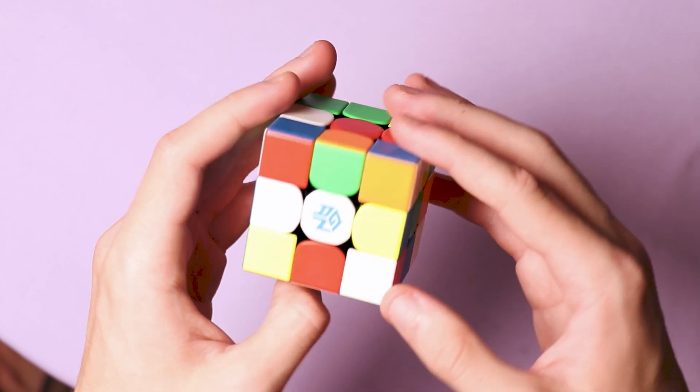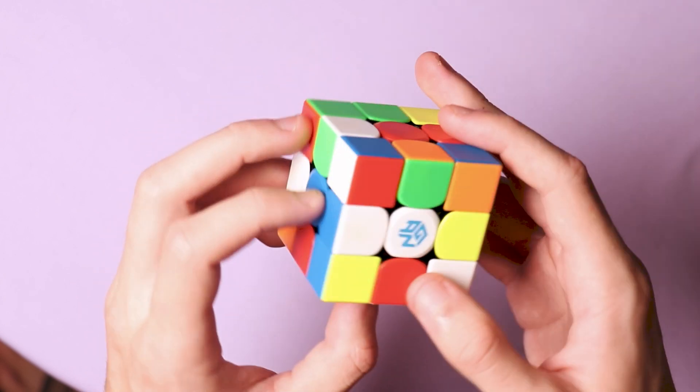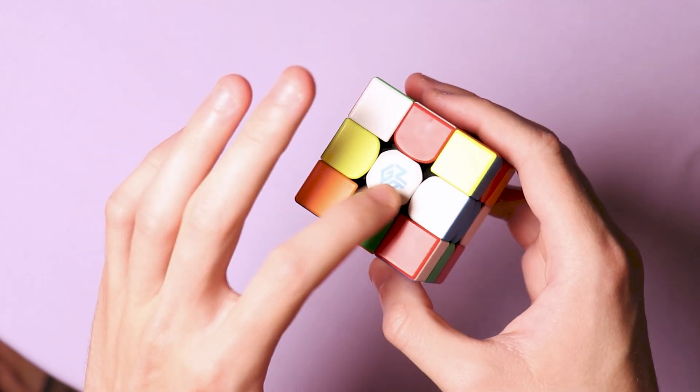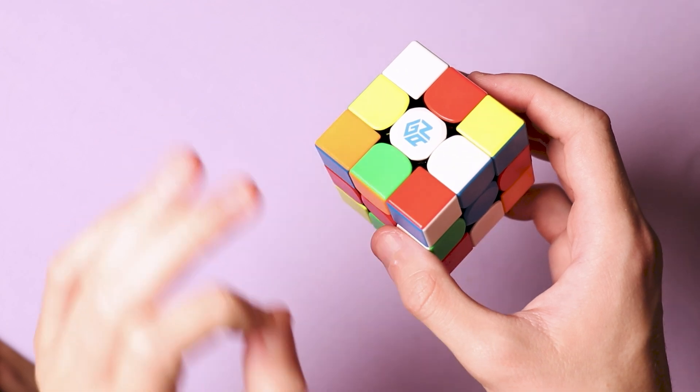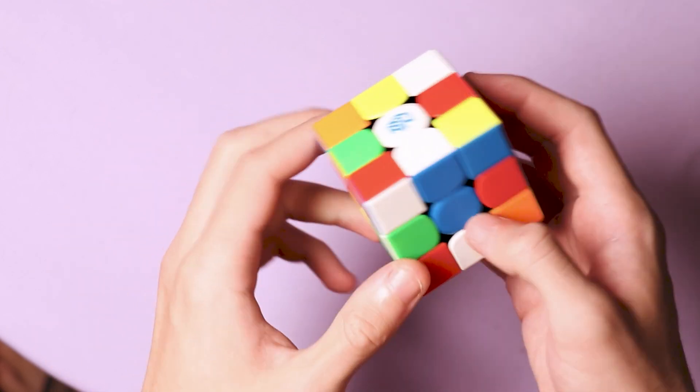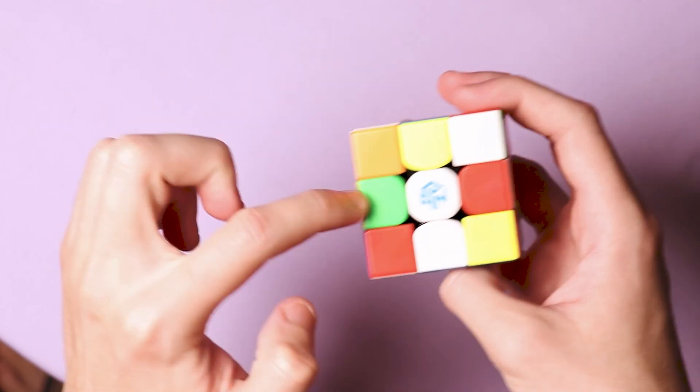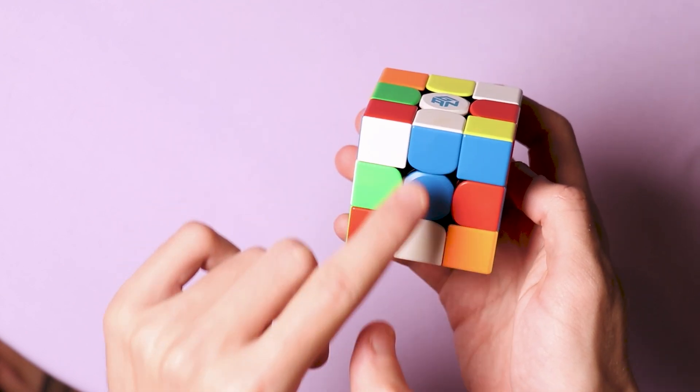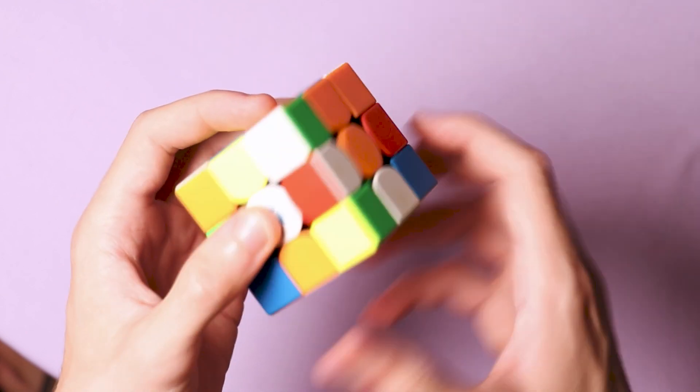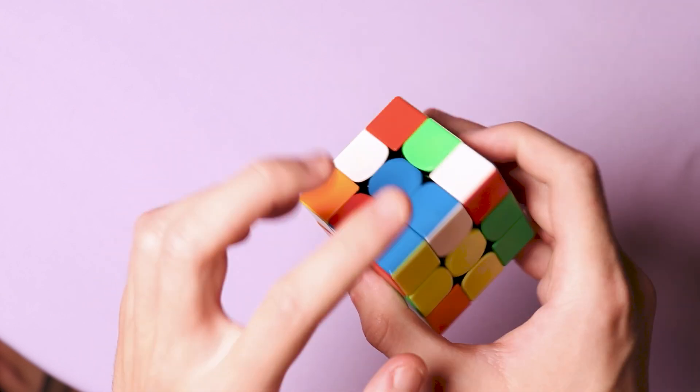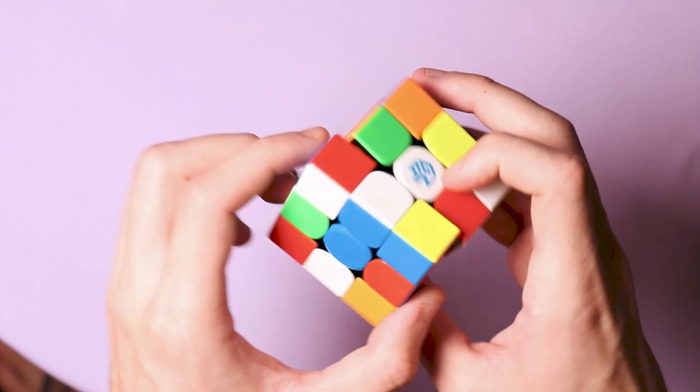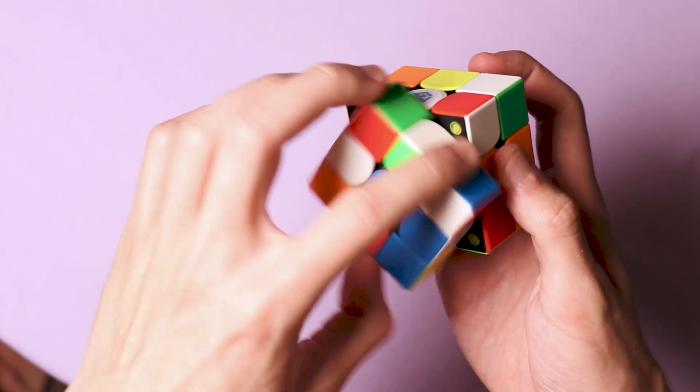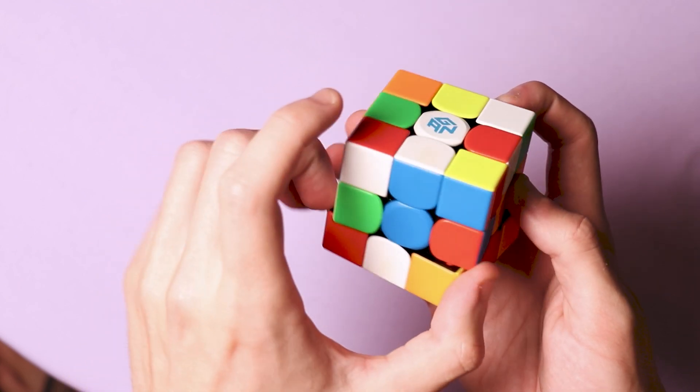Now that you know this, we're ready to create our first cross. I usually pick the white side for the cross and the single thing you have to follow is to make sure that the cross is white on the top and on the side it has to have the same colors like the center piece near it. The white needs to have blue in it, so I'm gonna take the white blue edge piece and put it right here by rotating the blue side twice.